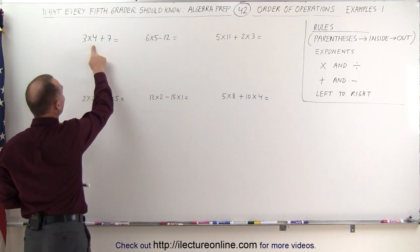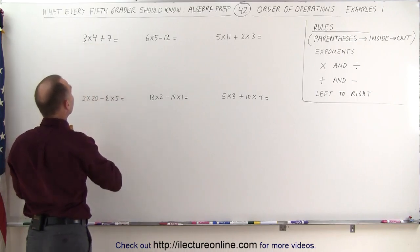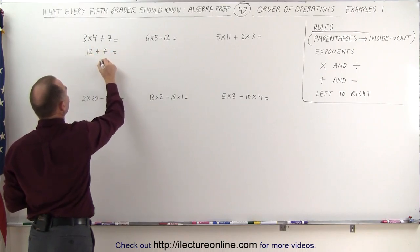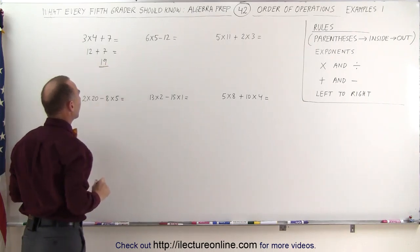So we do the 3 times 4 first before we add the 4 plus 7. 3 times 4 becomes 12 plus 7, and then when you add those together, 12 plus 7 is 19, and that's the proper answer.